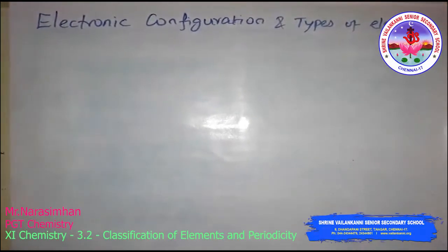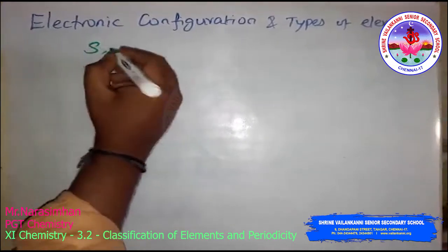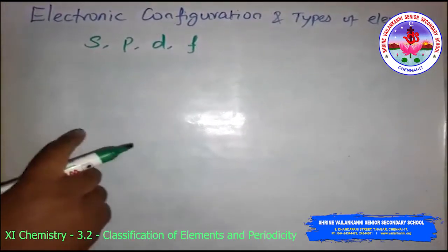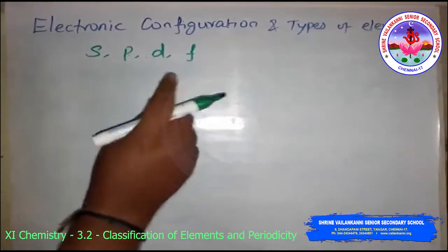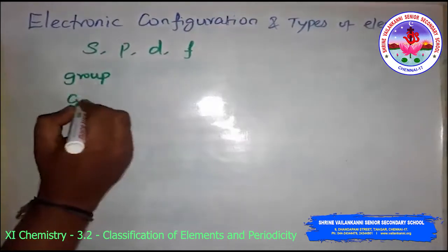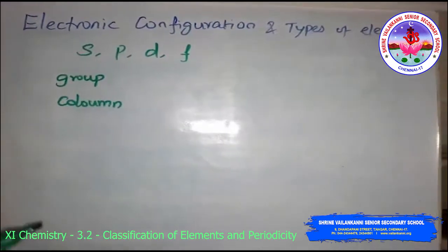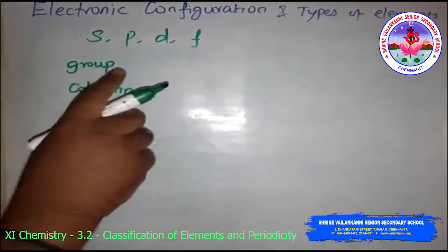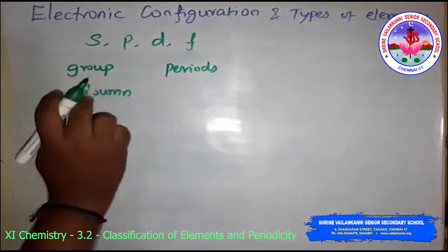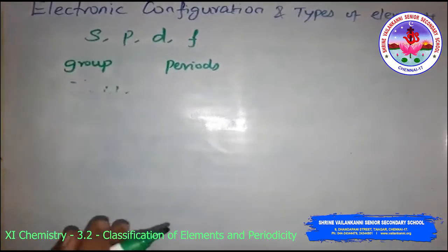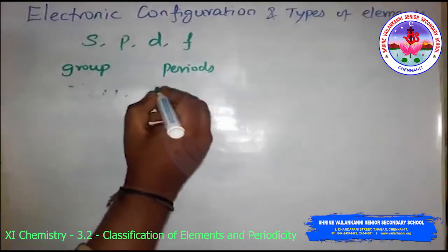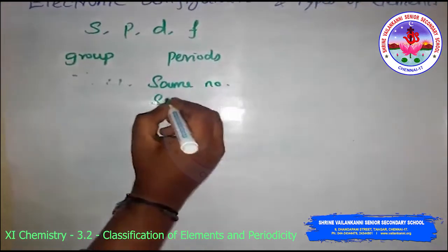We will discuss electronic configuration and the types of elements: s-block, p-block, d-block, and f-block elements. Based on the Aufbau principle, the electronic configuration of an atom provides a theoretical foundation for the periodic classification. The vertical columns of the periodic table are called groups, and the horizontal rows are called periods. Similarity arises among elements having the same number and the same distribution of electrons.